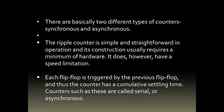There are basically two different types of counters: synchronous and asynchronous. The ripple counter is simple and straightforward in operation and construction, usually requiring a minimum of hardware. It does, however, have a speed limitation. In the asynchronous counter, we normally utilize JK flip-flops. In a JK flip-flop in toggle mode, J equals 1 and K equals 1. Applying a negative edge of the clock pulse, the flip-flop is toggled — that is, the output is complemented.